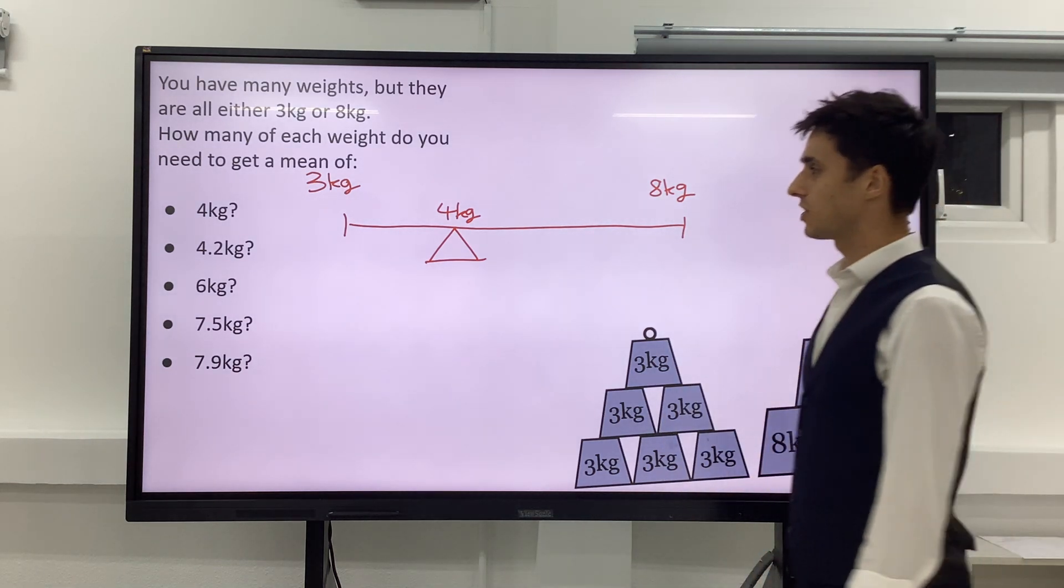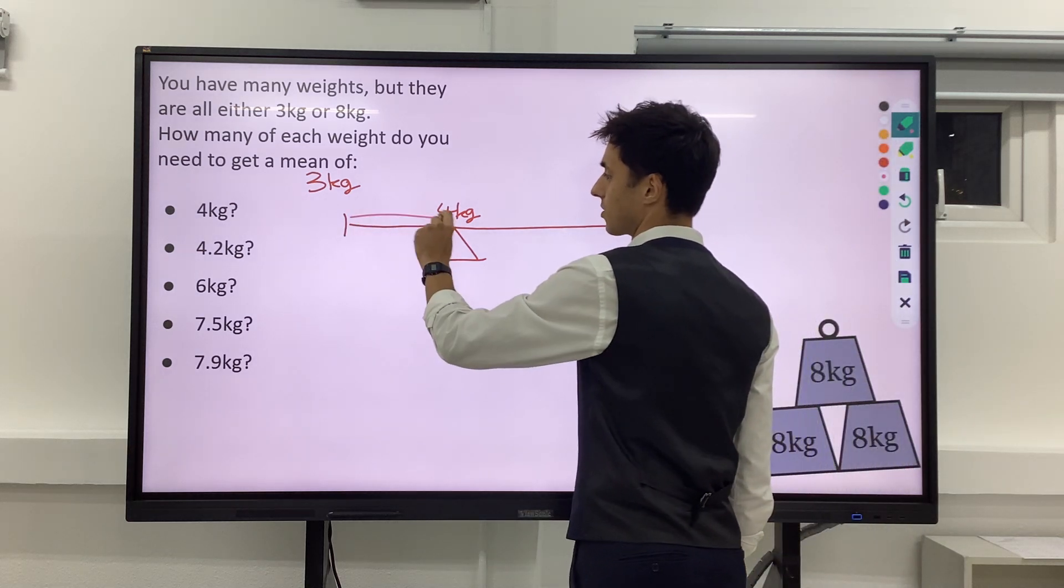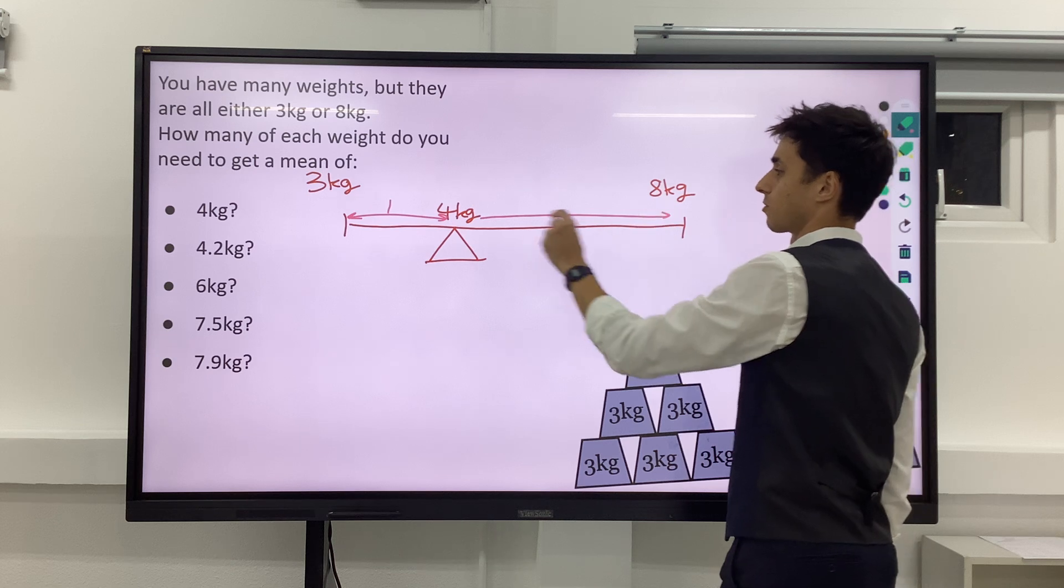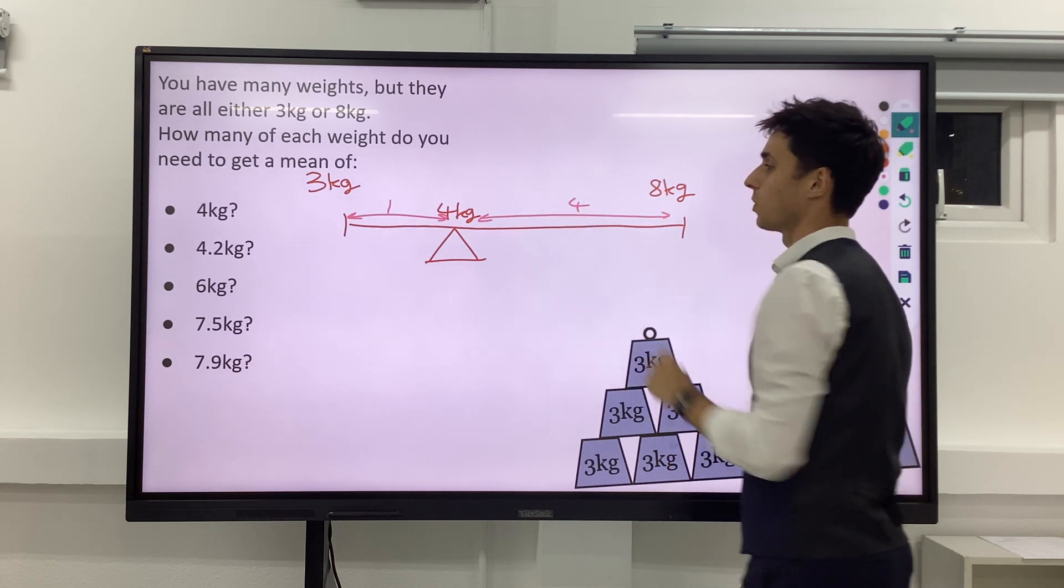So thinking about those distances, this distance from 3 to 4 is just 1, and from 4 to 8 on the other side, we've got 4.